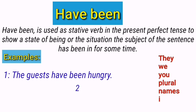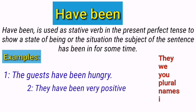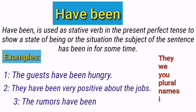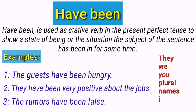They have been very positive about the jobs. Here 'have been' is used as a linking verb to describe the state of the subject 'they.' The rumors have been false. Again, 'have been' is used to describe the state of the subject. In this sentence 'have been' is a linking verb linking the subject 'the rumors' to the predicate adjective 'false,' meaning the rumors are in a state of being false.